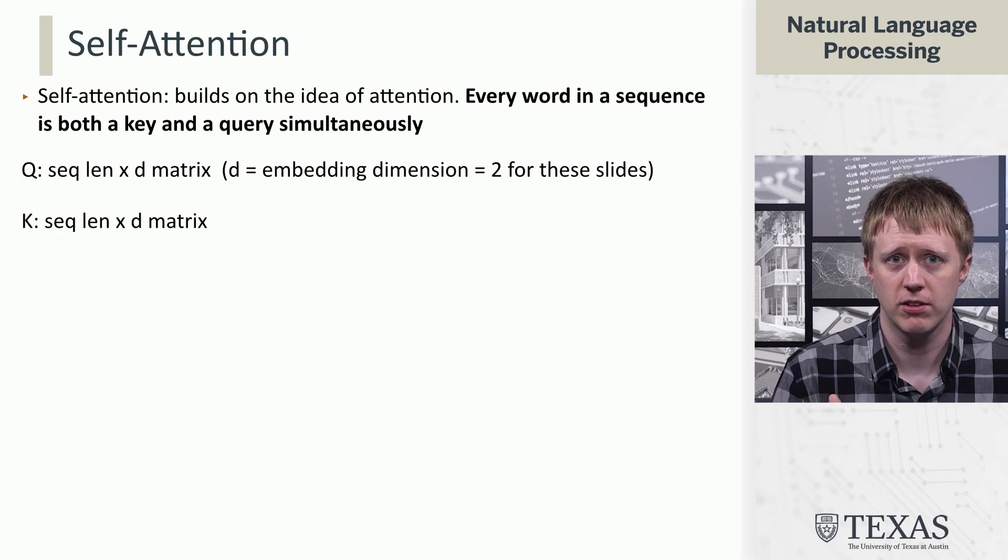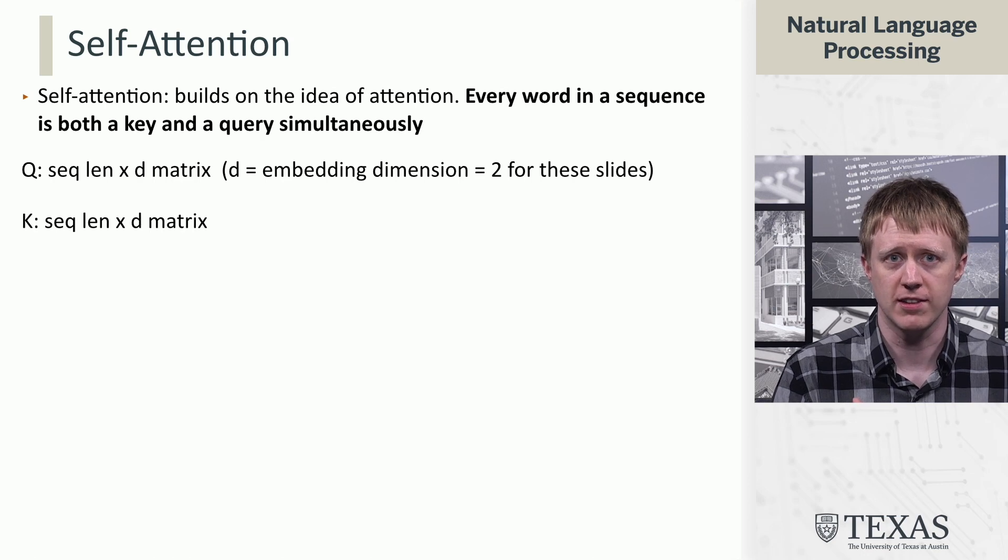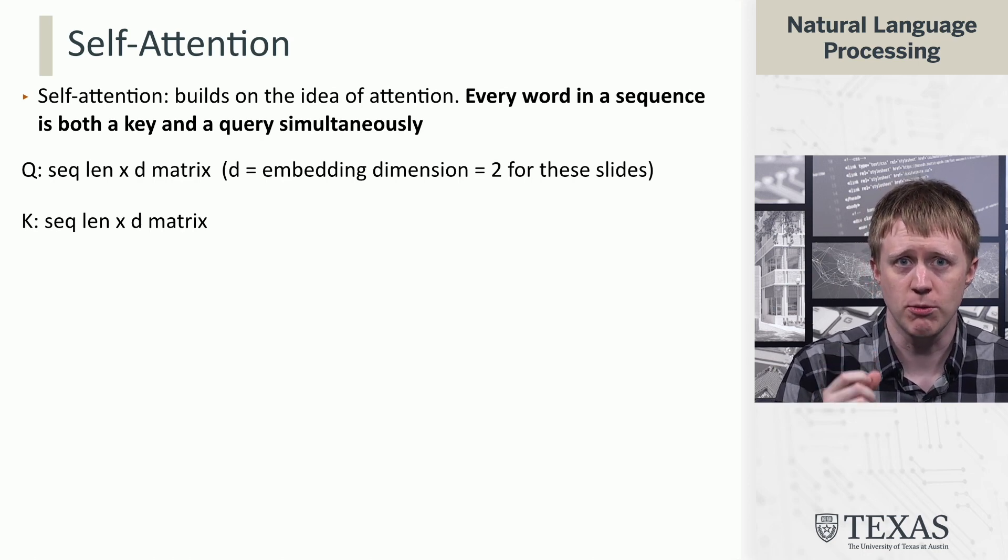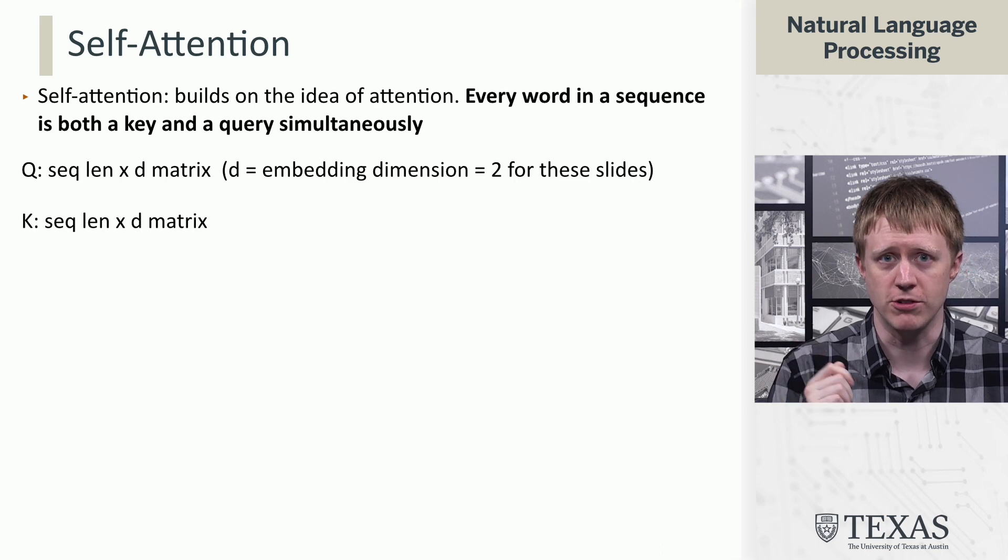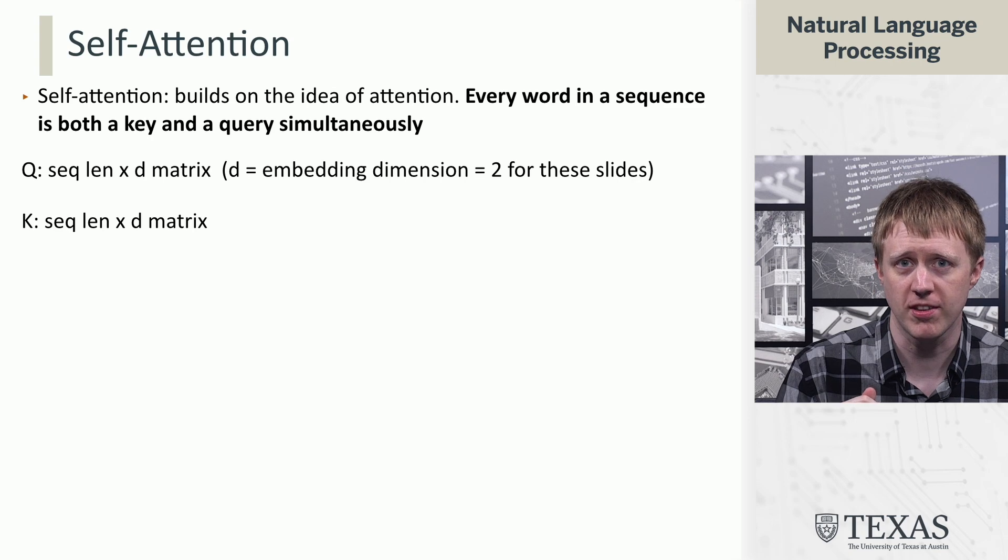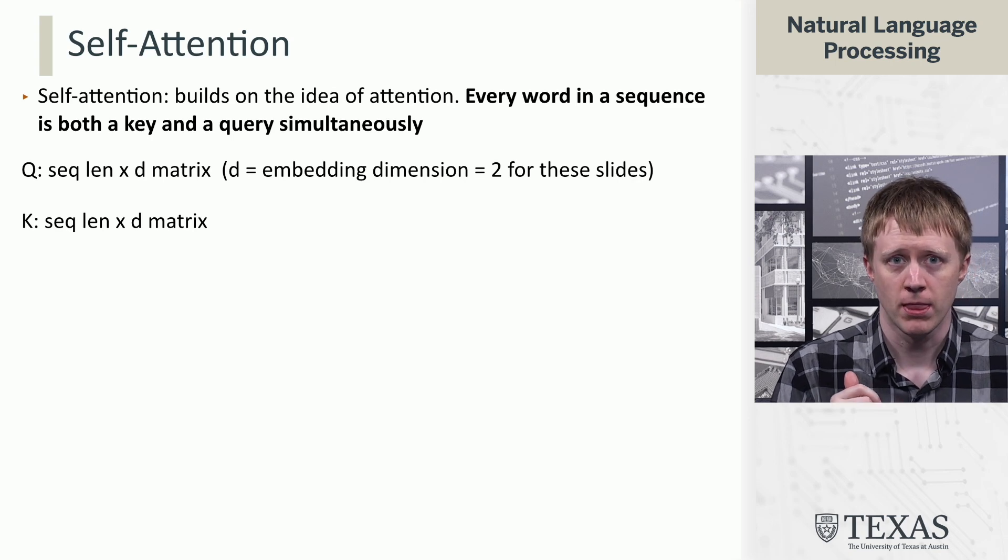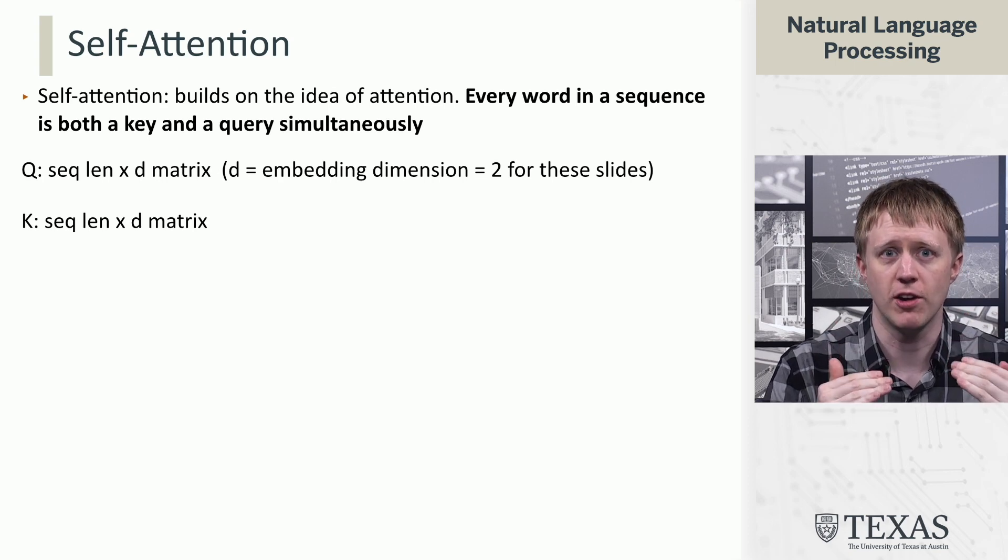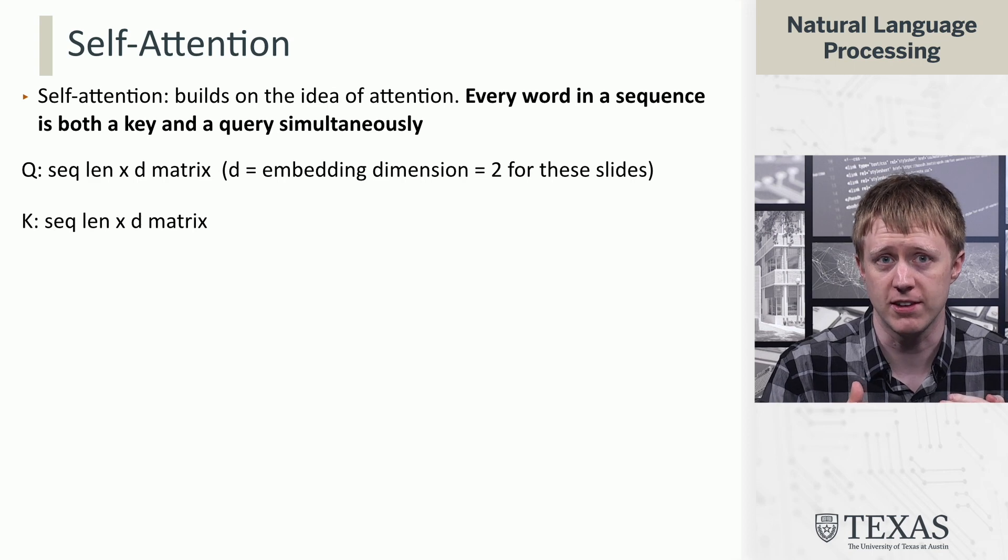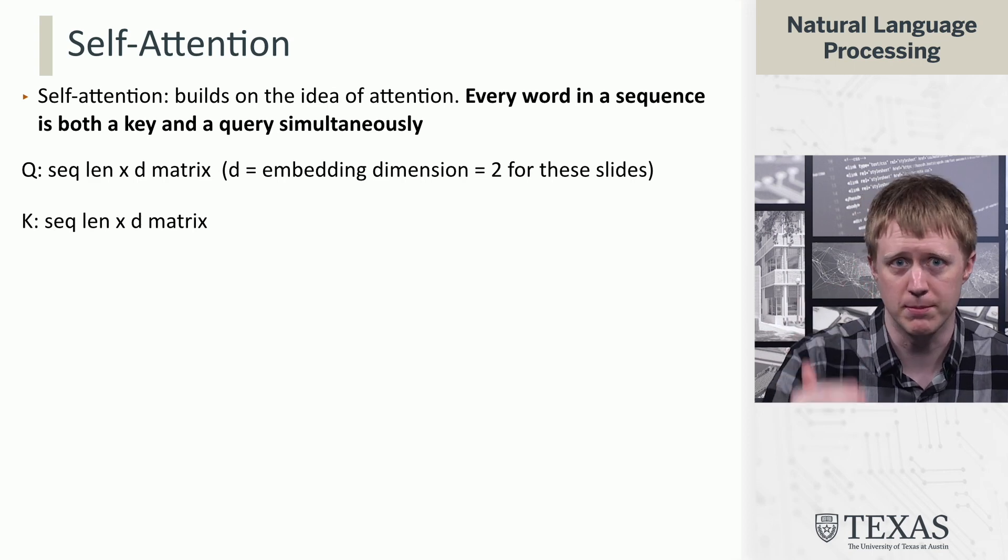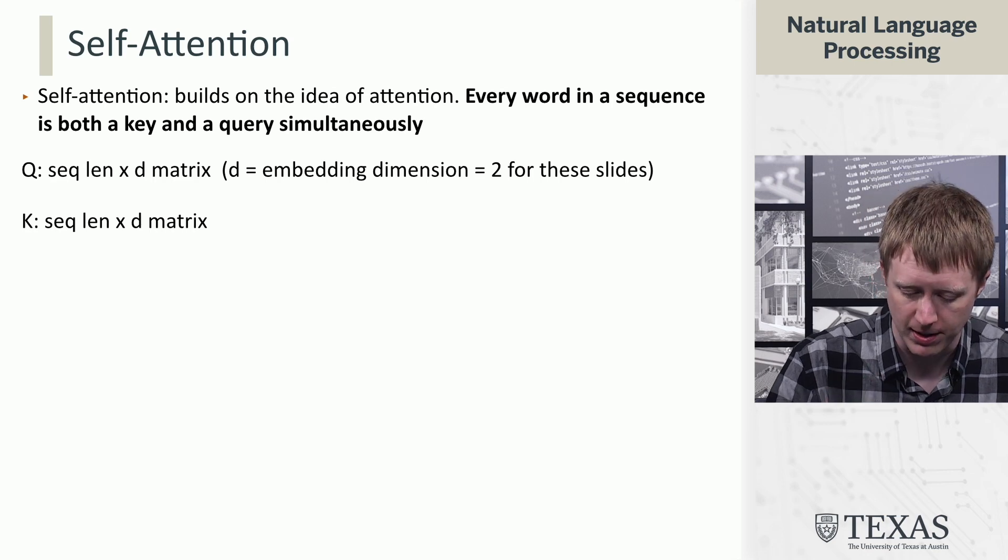We're going to look at these things as matrices. Q is going to be a sequence length by d matrix, where d is our embedding dimension, which for the purposes of these slides is going to be 2. The keys, again, each word or vector is both a key and a query, so the keys are also sequence length by d. Now we have basically many queries at the same time.